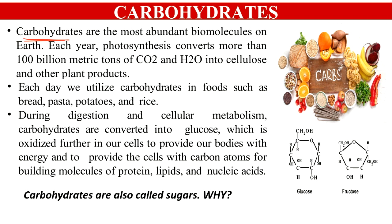Cellulose is one of the most important examples of carbohydrates, present in large amounts. Why? Because there are a lot of plants on earth, and those plants contain a lot of plant cells. In those plant cells, the outermost covering is the cell wall, and the cell wall is made up of cellulose. You can imagine how much carbohydrate must be present on the entire earth — and that's not even counting our human bodies.